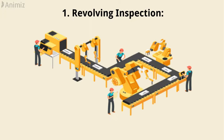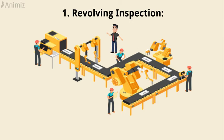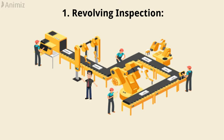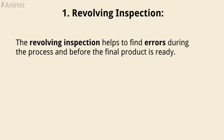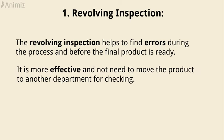In revolving inspection, the inspector walks around the workplace floor and checks machine to machine, taking samples of the work of various workers and machines. The revolving inspection helps to find errors during the process and before the final product is ready. It is more effective and does not need to move the product to another department for checking.